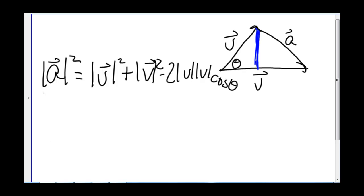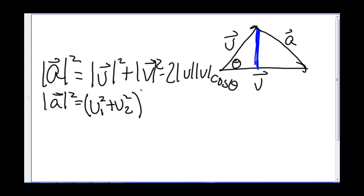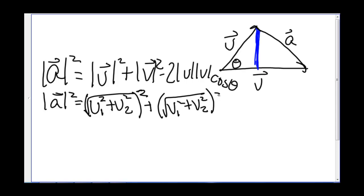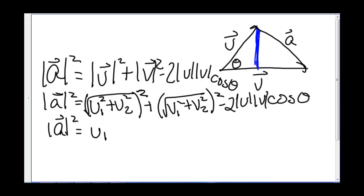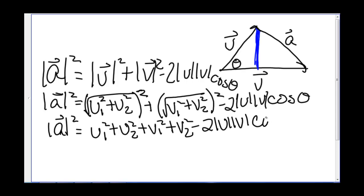So we can simplify this in some way. The length of u squared is u₁² + u₂², and the length of v squared is v₁² + v₂². So we have the length of a squared equals u₁² + u₂² + v₁² + v₂² minus 2 times the length of u times the length of v times cosine theta.